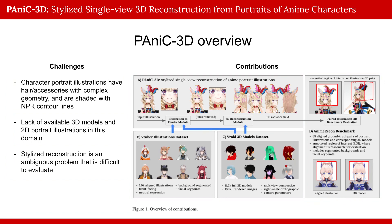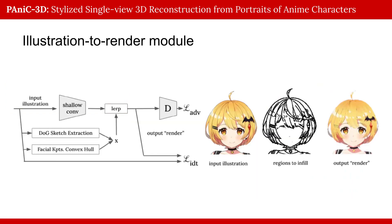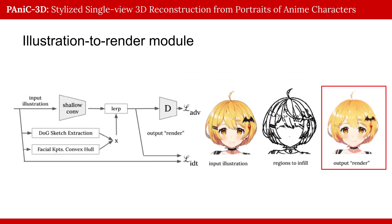We first tackle the challenge that character portrait illustrations have hair and accessories with complex geometry, and are shaded with non-photorealistic contour lines. We design a simple yet effective illustration-to-render network to partially cross the domain gap by removing illustration contour lines absent in a diffuse 3D render, while retaining lines present around facial features like the eyes and the mouth.